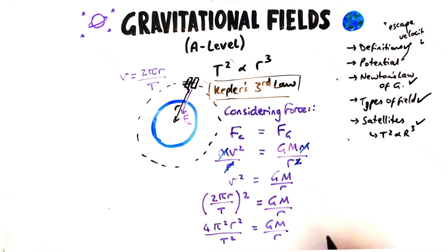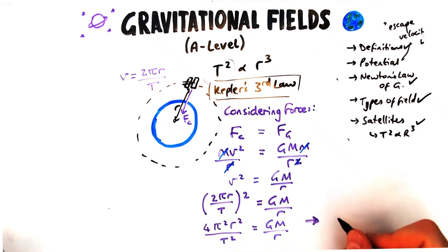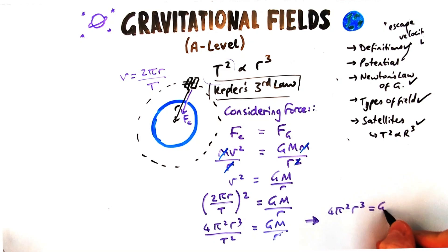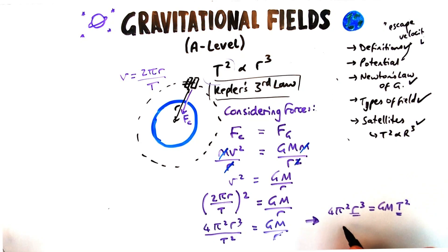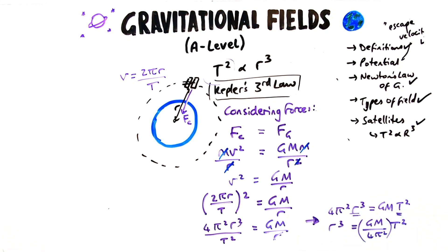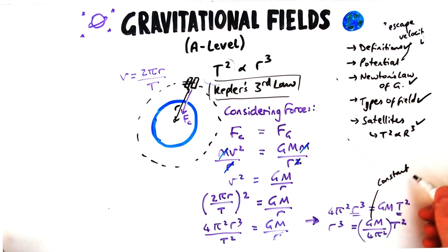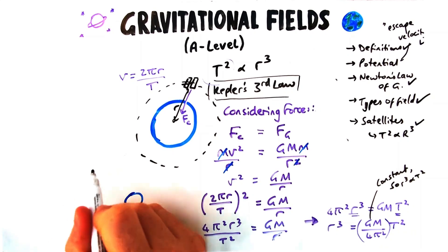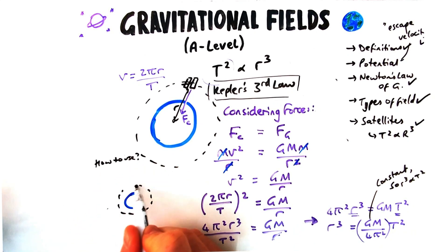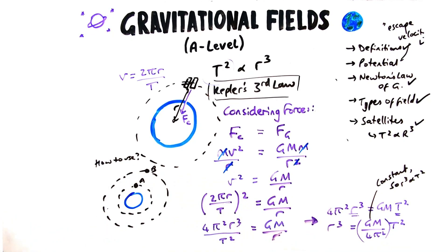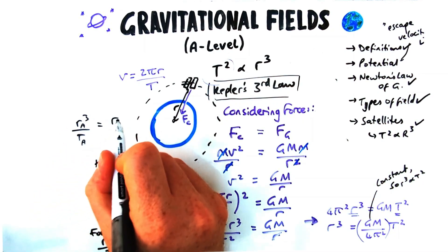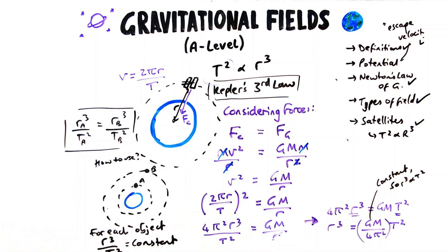To get time period into the equation, we use velocity equals 2πr/T, and squaring gives 4π²r²/T² = GM/r. Rearranging carefully: multiplying both sides by r gives 4π²r³ = GMT², then dividing by 4π² gives T² = (4π²/GM) × r³. Since G, M, and 4π² are all constants, we've proved that r³ is proportional to T². To apply this: for two satellites, r³/T² must be constant, so r_a³/T_a² = r_b³/T_b².